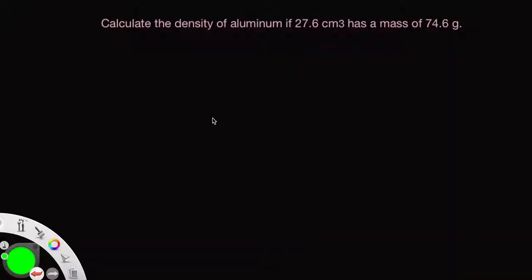This asks us to calculate the density of aluminum. Let's start out by writing the density formula. Density is equal to mass divided by volume.